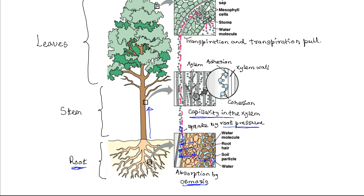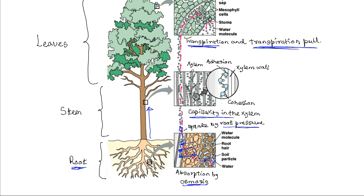As this is taking place, transpiration is also occurring, and as water evaporates and diffuses out it generates a transpiration pull, which contributes to further rising of water molecules. Within the vessels, there is also the adhesion force and cohesion force — as water molecules rise up they are pulled up by adhesion force from the xylem walls, and as individual molecules rise up they pull those behind them by force of cohesion. So we have a combination of all these forces — root pressure, capillarity, transpiration pull, cohesion, and adhesion — all contributing to the rising of water from the roots to the leaves.